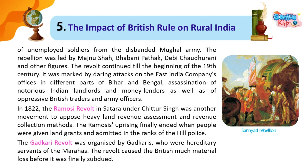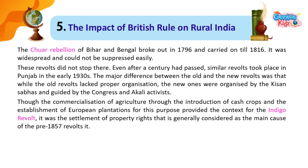In 1822, the Ramosi revolt in Satara under Chittur Singh was another movement to oppose heavy land revenue assessment and revenue collection methods. The Ramosi uprising finally ended when people were given land grants and admitted into the ranks of the hill police. The Gadhkari revolt was organised by Gadhkaris, who were hereditary servants of the Marathas. The revolt caused the British much material loss before it was finally subdued. The Chuar Rebellion of Bihar and Bengal broke out in 1796 and carried on till 1816. It was widespread and could not be suppressed easily.